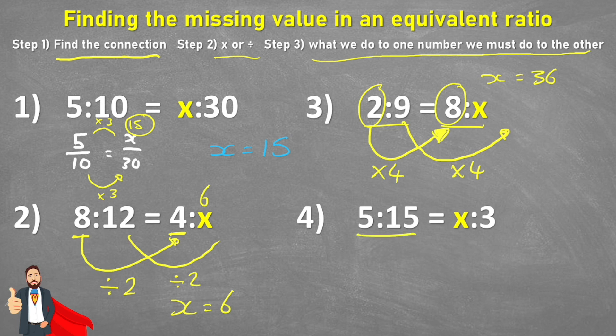Let's look at our last one. Five to 15 is equivalent to x to three. Now let's find the connection. Well, we've been given the second number in each ratio. I have a 15 and a three. How do I get from 15 to three? Well, I'll need to divide by five. If I'm dividing the second digit by five, I then need to divide the first one by five. So five divided by five equals one. So in this last case, x equals one. Pretty straightforward, right?